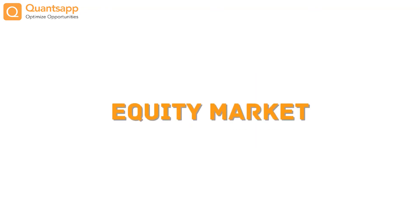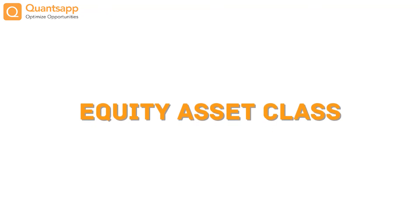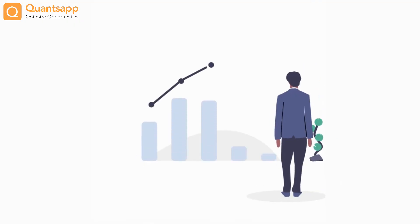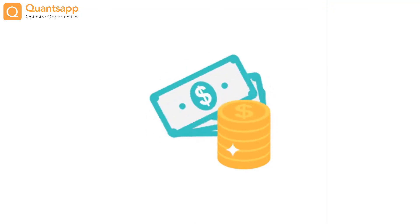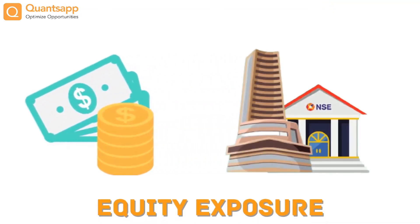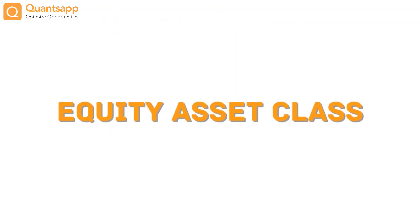Coming to the last asset class, which is the Equity Asset Class. This asset class has the most potential to outperform the other asset classes. So to grow our wealth exponentially, the majority of funds should be invested in asset classes with equity exposure — 55 to 60% of the total capital should be invested in this asset class.